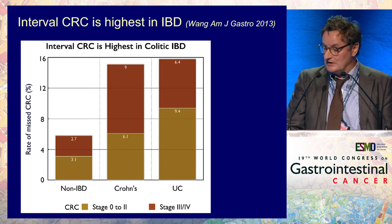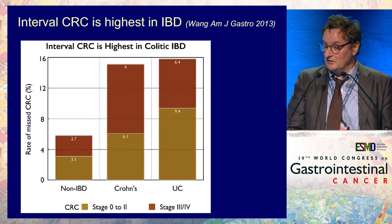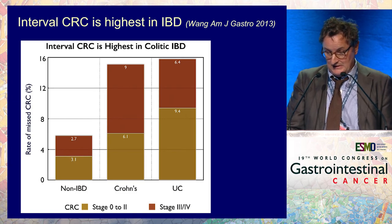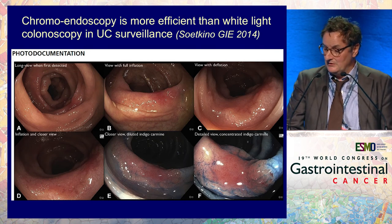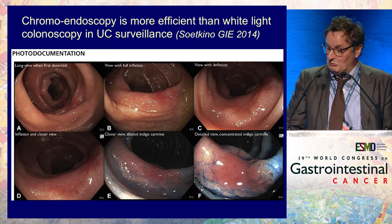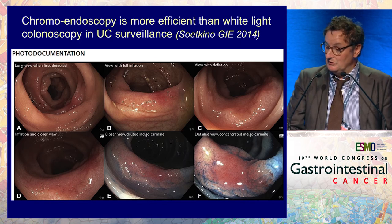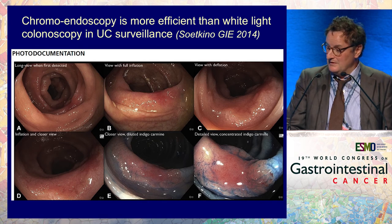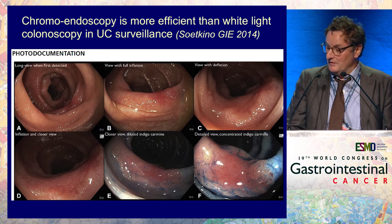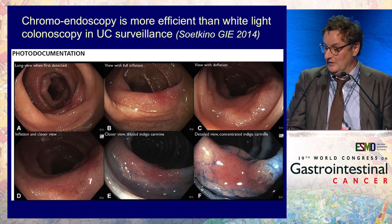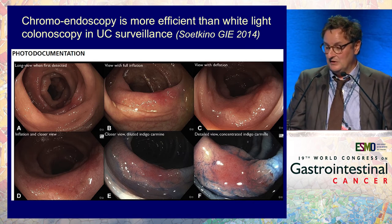The interval colorectal cancer rate is highest in IBD compared to sporadic colorectal cancer, suggesting endoscopic diagnosis is more difficult in IBD. Here you can see a colonoscopy with good preparation showing a dysplastic, dyschromic region — nothing special with full inflation, not suspect at all. When you deflate the colon it becomes more suspect, and when you apply indigo carmine spray, a tumor stands out with greater contrast, illustrating how challenging endoscopic diagnosis of IBD-related colorectal cancer can be.